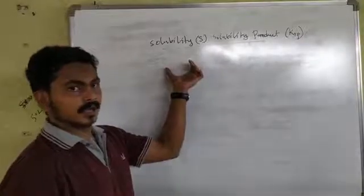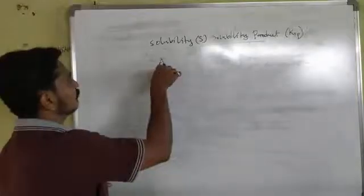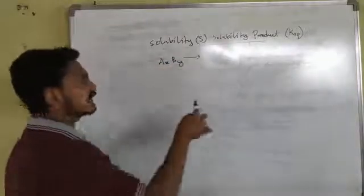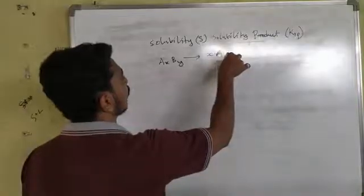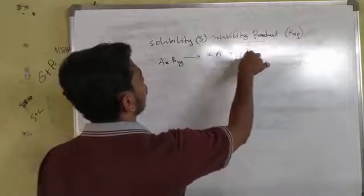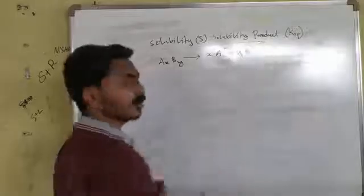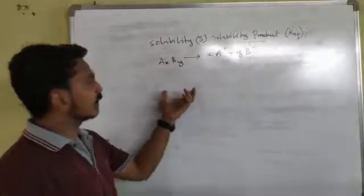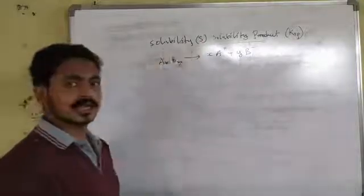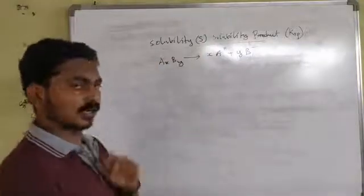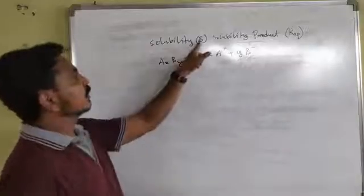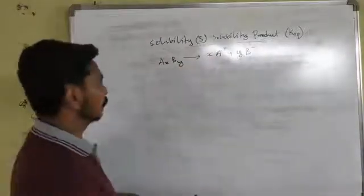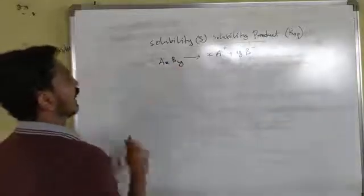Consider a compound AxBy. This compound undergoes dissociation into x times A with a positive charge and y times B with a negative charge. The concentration terms give us the expression for Ksp. The relation between Ksp and S is derived from this dissociation.